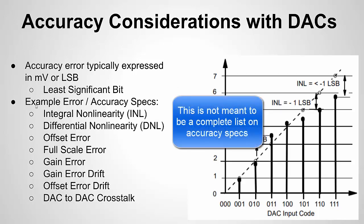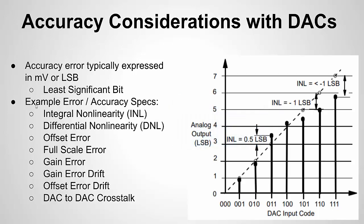Examples of accuracy and error specs include: integral nonlinearity, differential nonlinearity, offset error (your output isn't at the exact voltage you expect), full-scale error (you're not reaching your top V-reference value), gain error, gain drift, offset drift, and DAC-to-DAC crosstalk. Crosstalk occurs in multi-channel DACs where parasitics transfer energy from one output channel to another, causing error in the affected channel.